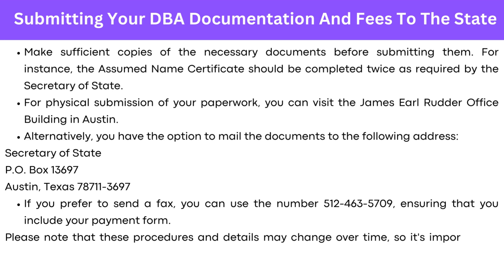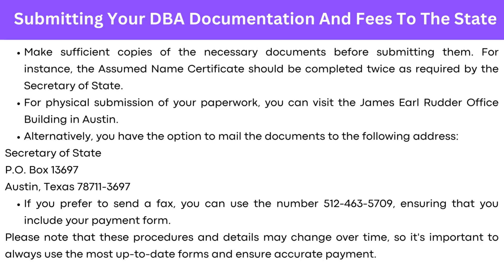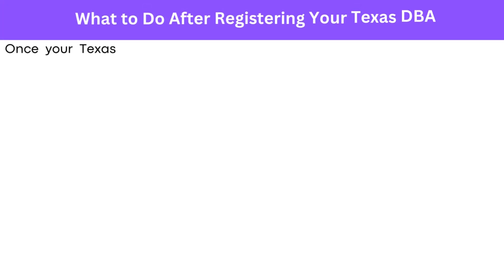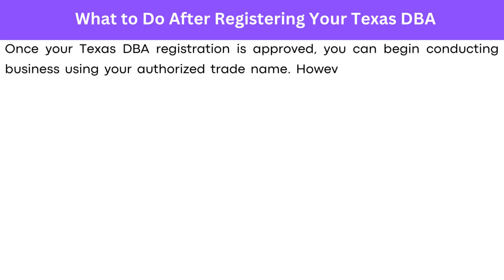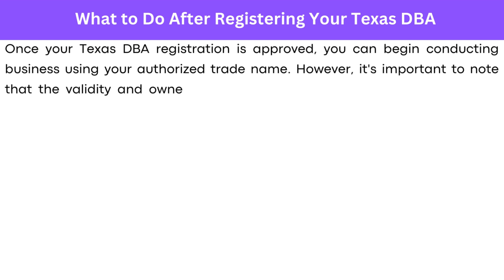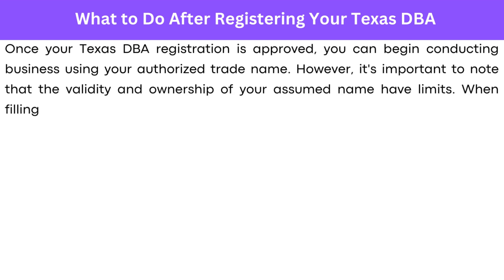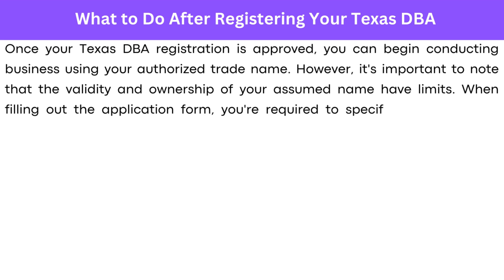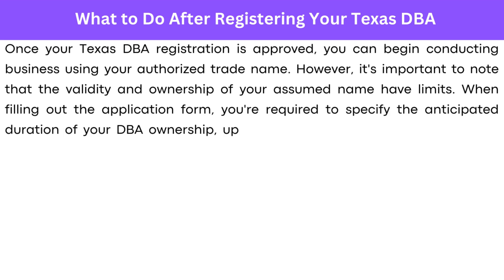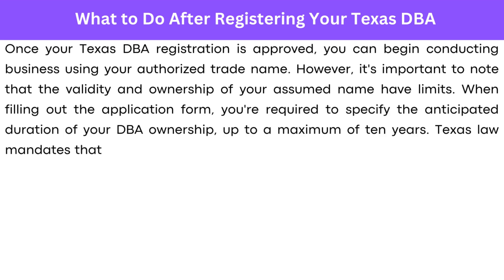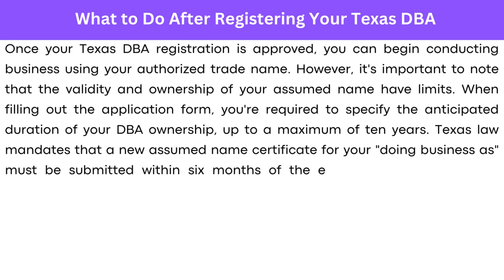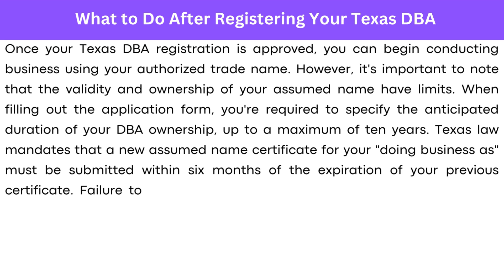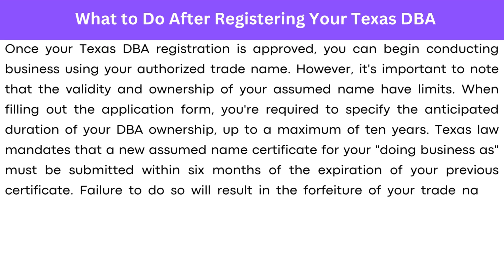Please note that these procedures and details may change over time, so it's important to always use the most up-to-date information and ensure accurate payment. Once your Texas DBA registration is approved, you can begin conducting business using your authorized trade name. However, validity and ownership of your assumed name have limits. When filling out the application form, you are required to specify the anticipated duration of your DBA ownership, up to a maximum of 10 years. Texas law mandates that a new assumed name certificate must be submitted within 6 months of the expiration of your previous certificate. Failure to do so will result in forfeiture of your trade name ownership.